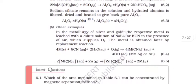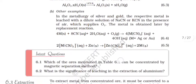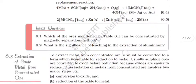Other examples in the metallurgy of silver and gold: the respective metal is leached with the dilute solution of NaCN or KCN in the presence of air which supplies O2. The metal is obtained later by displacement reaction.